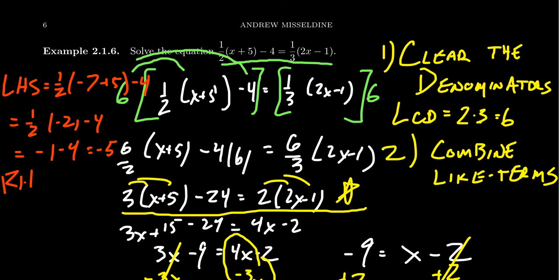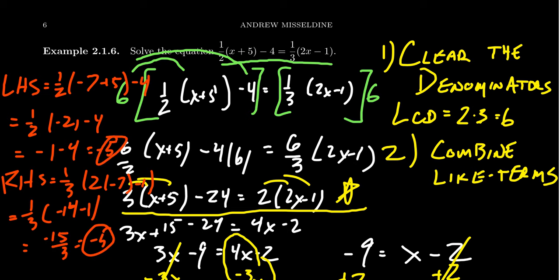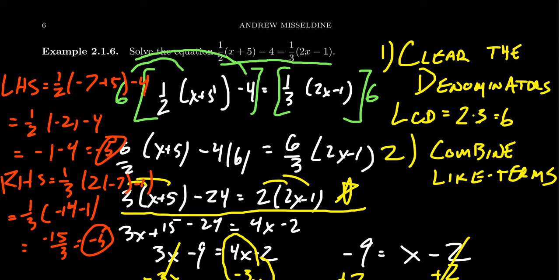We compare that to the right-hand side, which is 1/3(2 times -7 minus 1). Negative 7 times 2 is -14. Negative 14 minus 1 gives us -15. The -15 over 3 gives us -5. So we can see that the left-hand side and right-hand side agree with each other. We did find the solution to this linear equation.